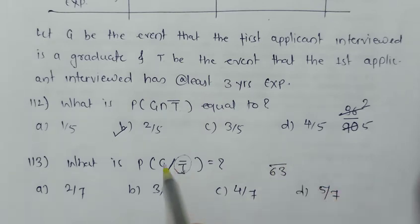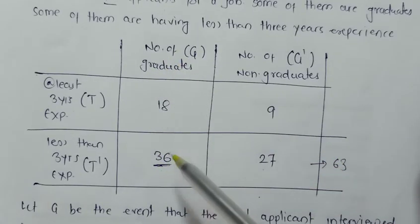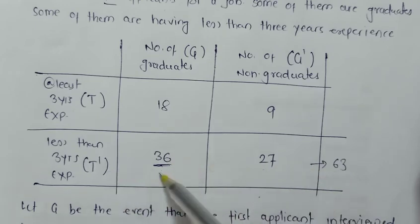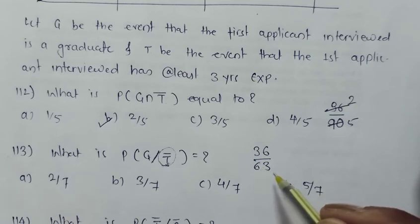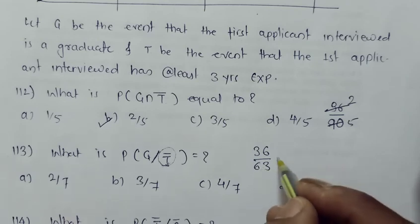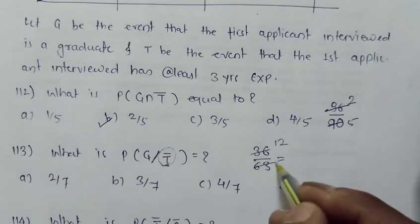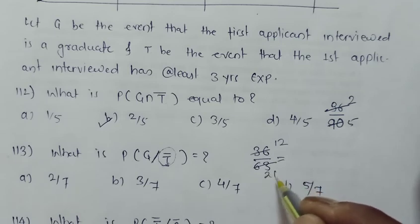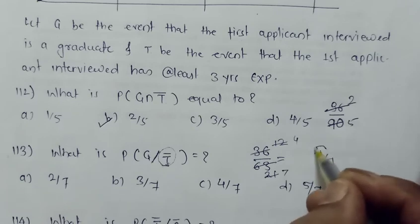Out of 63, how many are the graduates? There are 36 graduates having less than three years experience. So out of these 63 T dash students, 36 are graduates. The answer is 36 divided by 63, which simplifies — dividing both by 9 gives 4 by 7. So 4 by 7 is the answer for this question.